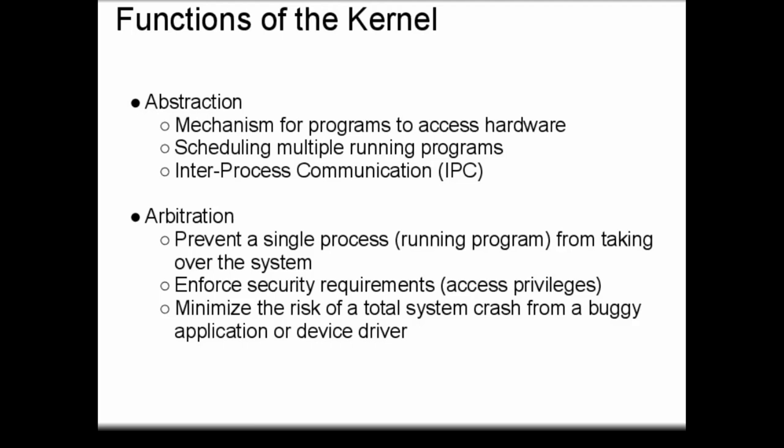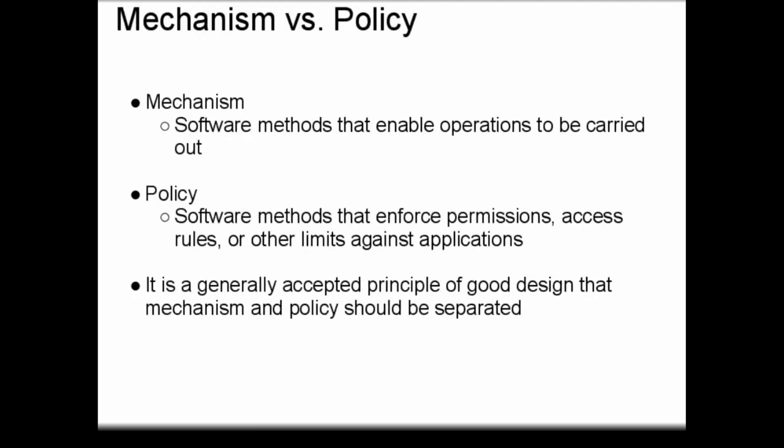It's important to distinguish between mechanism and policy when discussing the internal components of an operating system. The mechanism, put simply, is the software methods that enable operations to be carried out. An example of a mechanism would be code that, implemented inside a device driver, sends a message to a device that causes that device to blink a light, enable a camera, or perform some other hardware-level operation.